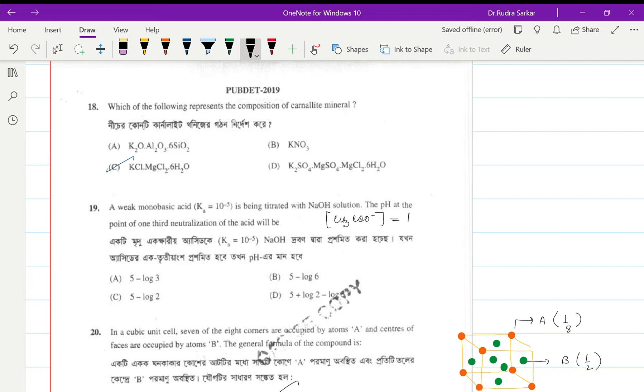One-third amount of acetate is being produced. The concentration of the acid should be 1 minus one-third, and that should be 2/3.